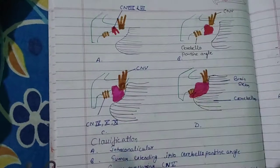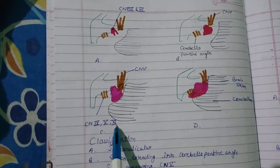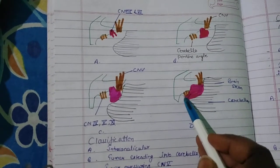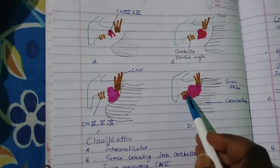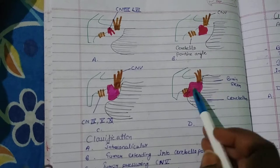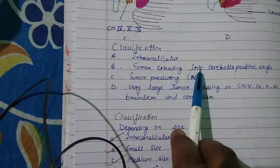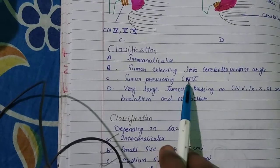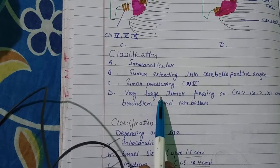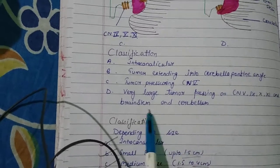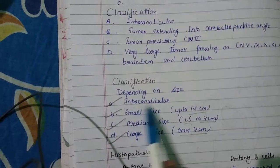The tumor can involve the 5th and 7th nerves, or the 9th and 10th nerves. The brainstem can also be affected by size. Classification depends on tumor extending into the CP angle, tumor pressing cranial nerve 5, or very large tumor pressing all 5, 9, 10, 11 and brainstem and cerebellum.